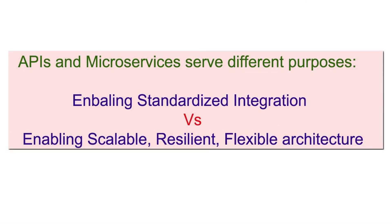The next and last point for beginners to understand the difference is that the purpose and reason of existence of APIs and microservices is different. When we talk about APIs, APIs are enabling standardized integration by exposing services in a way that are based on certain standards. For example, when we expose some APIs in the form of REST services, we have standard HTTP methods, CRUD operations, and all other standards being followed. So basically, we expose the services in a more streamlined, standardized manner by using APIs, and on top of that we can always have API governance and API management.